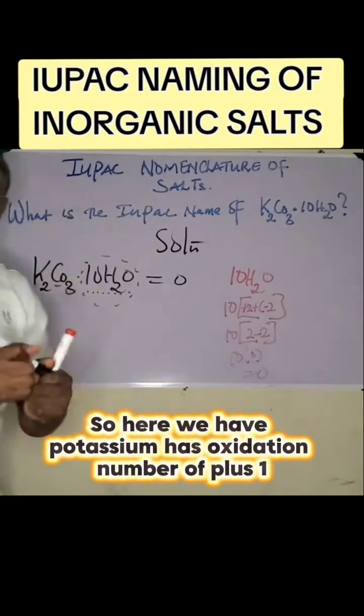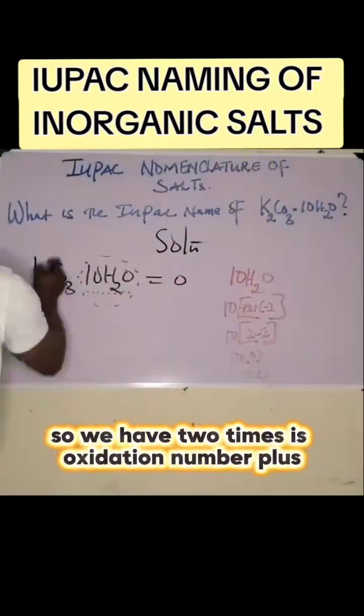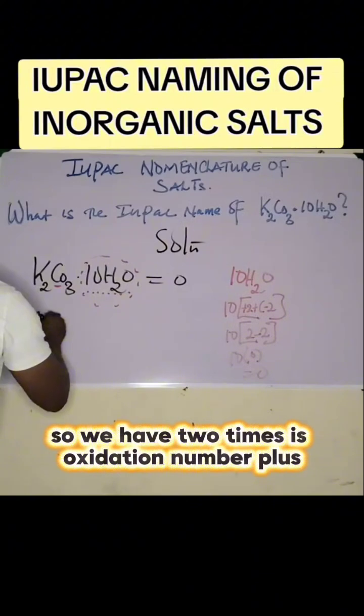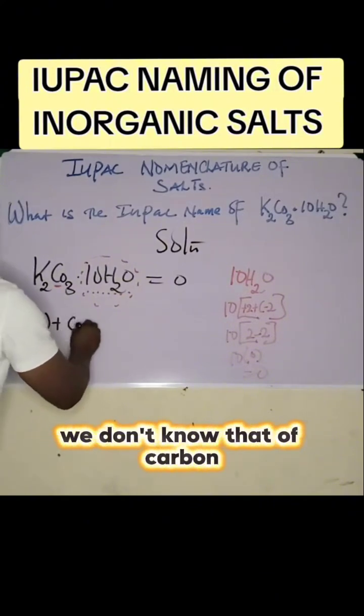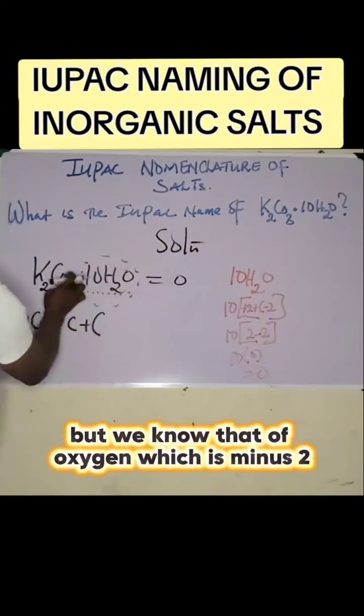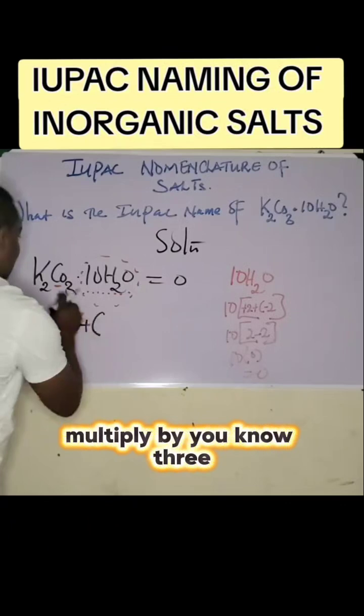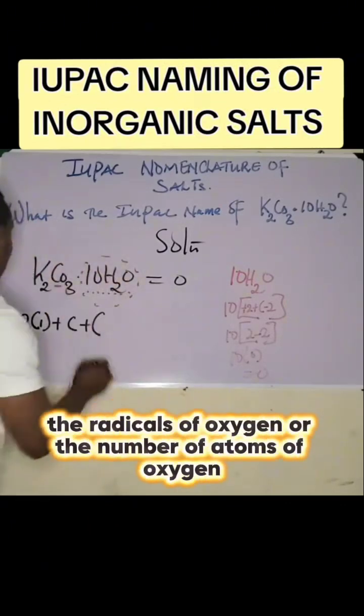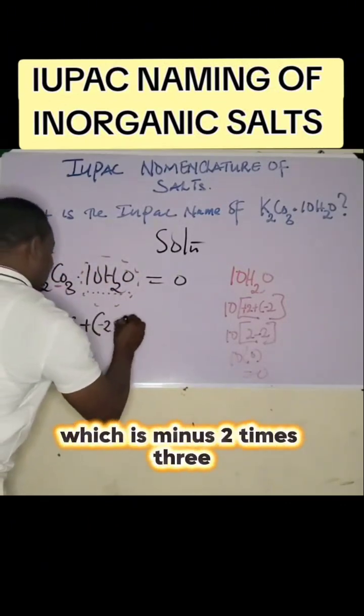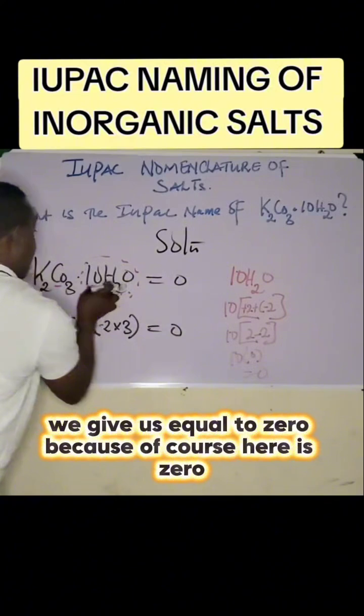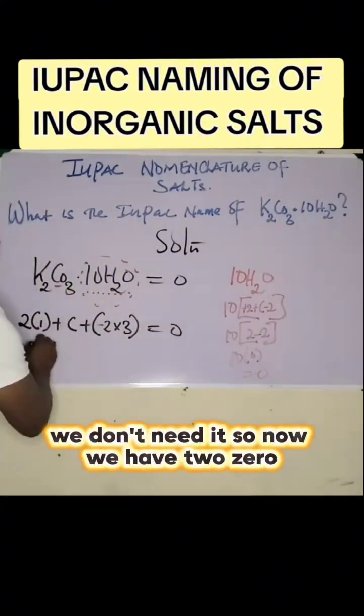We have potassium with oxidation number of plus one. So we have two times this oxidation number, plus we don't know that of carbon, but we know that of oxygen which is minus two, multiplied by three. Minus two times three gives us equal to zero. The water here is zero, we don't need it.